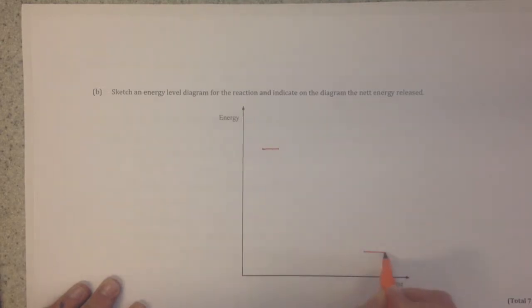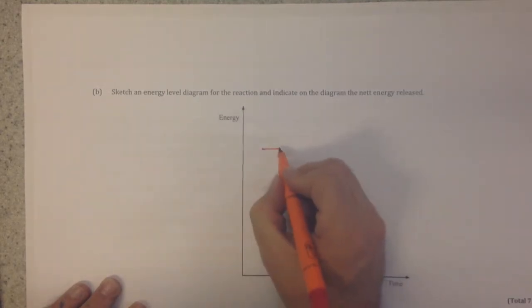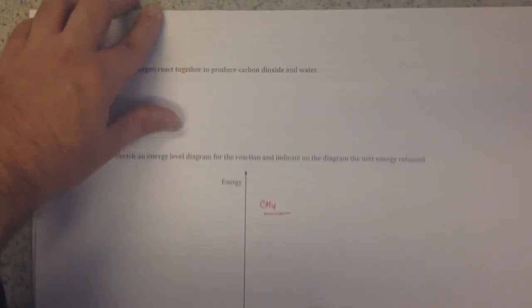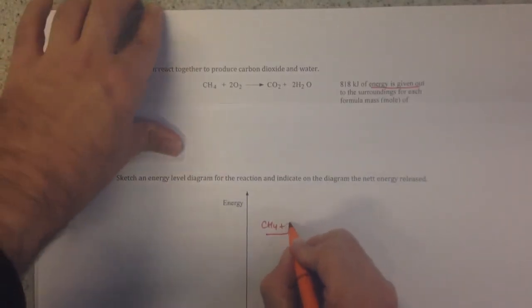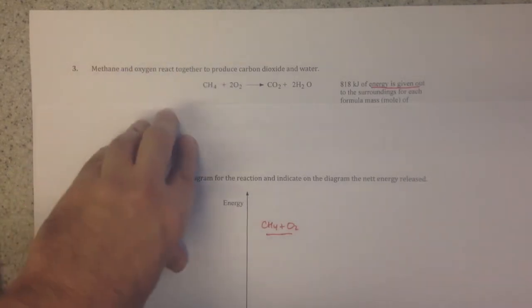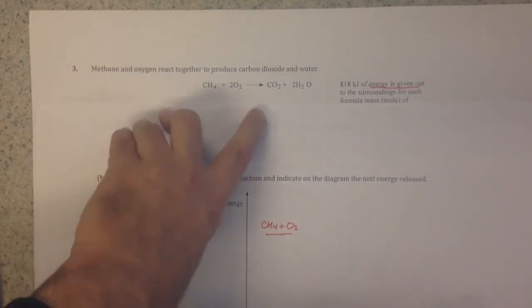the starting materials—the reactants, CH4 + 2O2—go here. And the products are at the bottom.